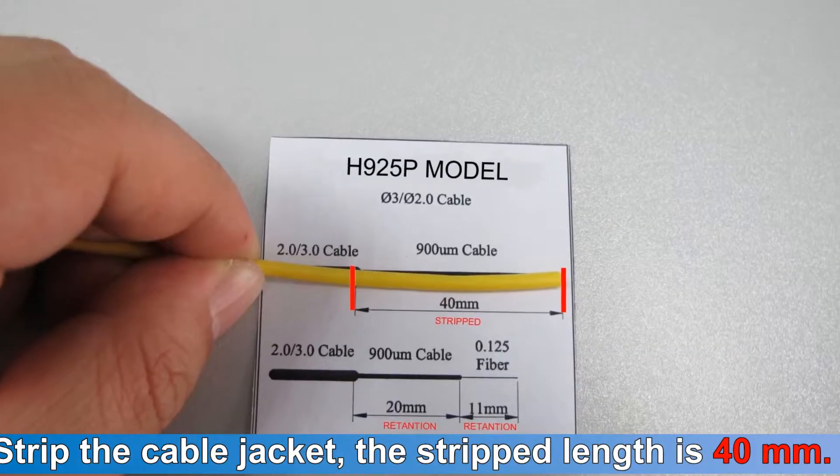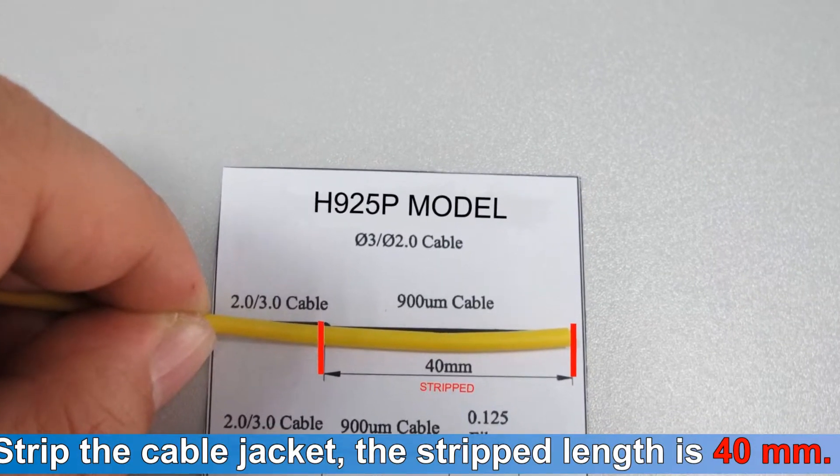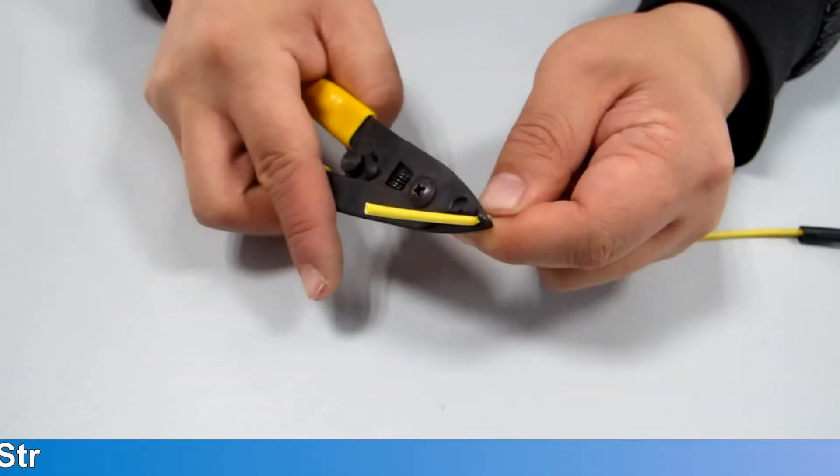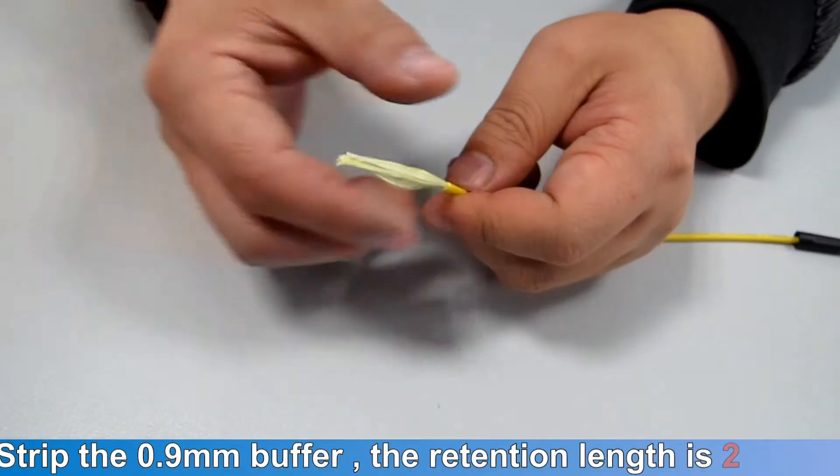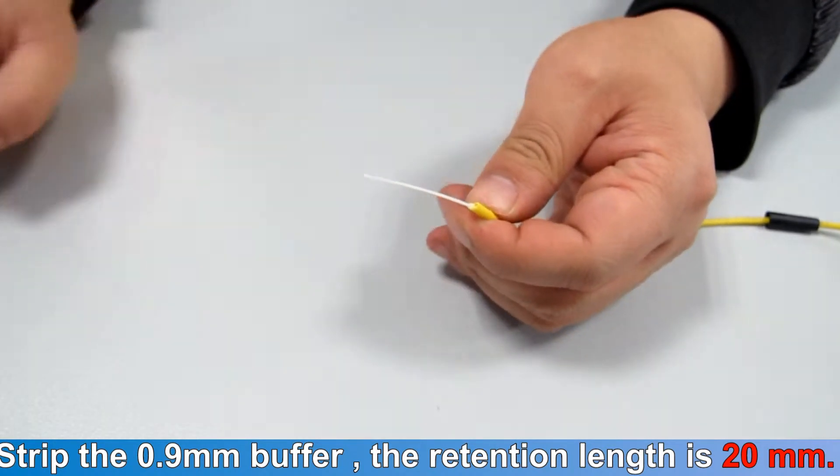Strip the cable jacket, the stripped length is 40 mm. Strip the 0.9 mm buffer, the retention length is 20 mm.